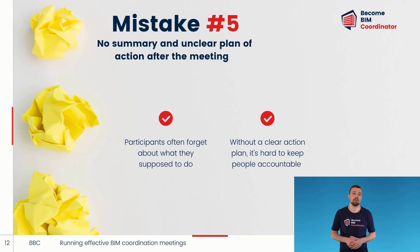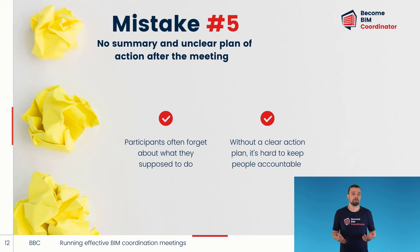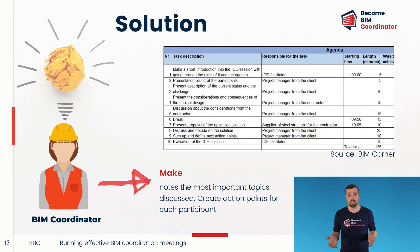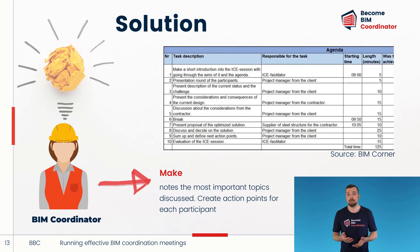Last but not least, mistake number five: not having a clear plan of action to ensure issues raised at the meeting get resolved. BIM coordination meetings aren't there to discuss design problems in detail. Rather, they aim to highlight the problem and force the relevant parties to decide who will resolve it. The real solutions are addressed after the meeting. But people get busy and often forget what they are supposed to do. To avoid this, the BIM coordinator or another delegated person should make notes on the most important topics discussed. These notes can be kept in one convenient place using, for example, an Excel spreadsheet. After the meeting, the BIM coordinator should send an email to each participant with the spreadsheet attached so everyone is reminded of what actions need to be taken and who is responsible.